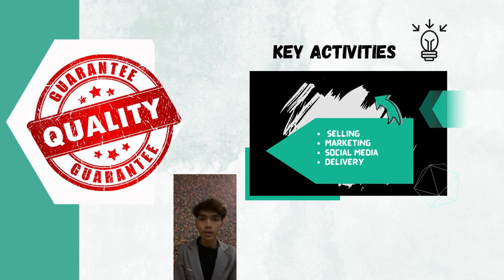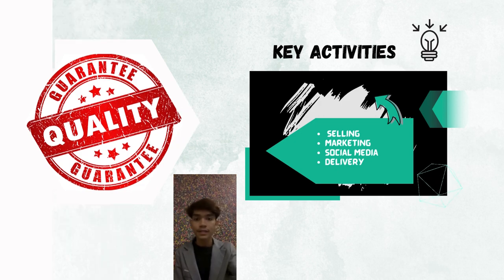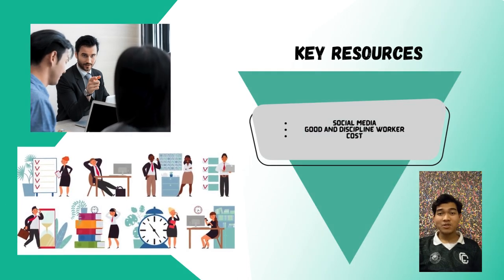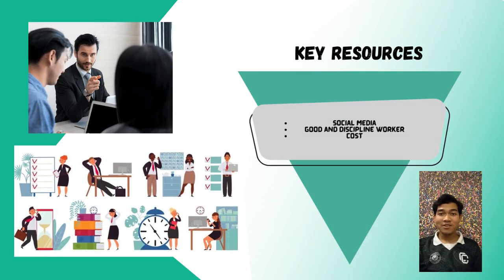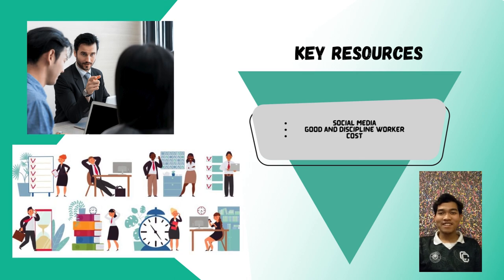The next element is key activities. We will be selling the product, marketing, being active in social media, and we are also available for delivery. Furthermore, we have key resources. First is social media — we need social media to grow our business to the public by promoting our product.